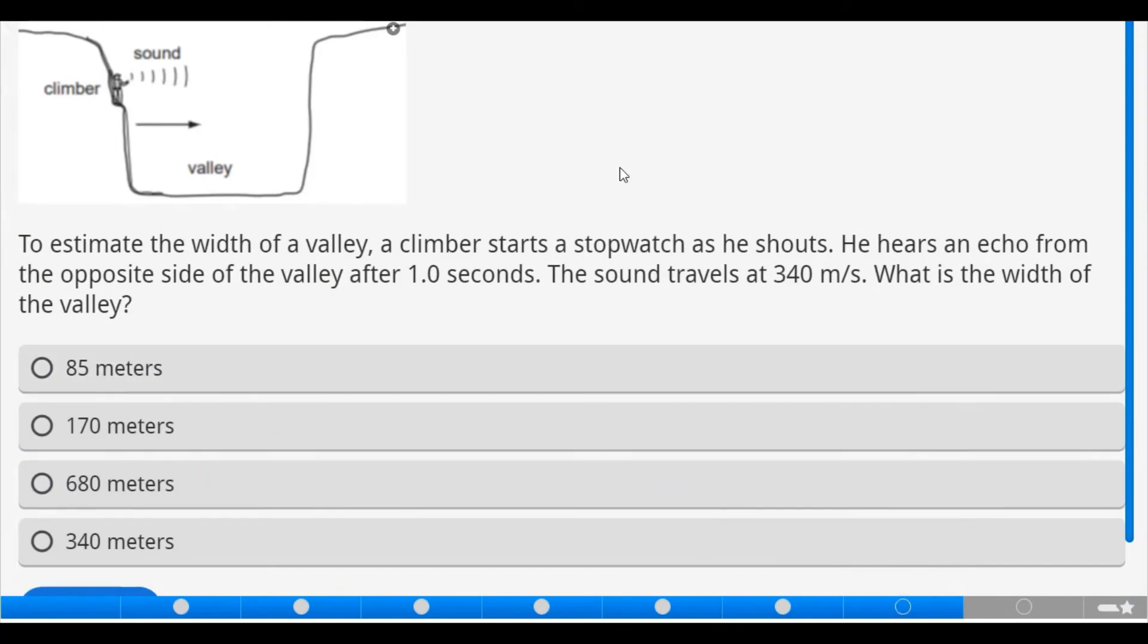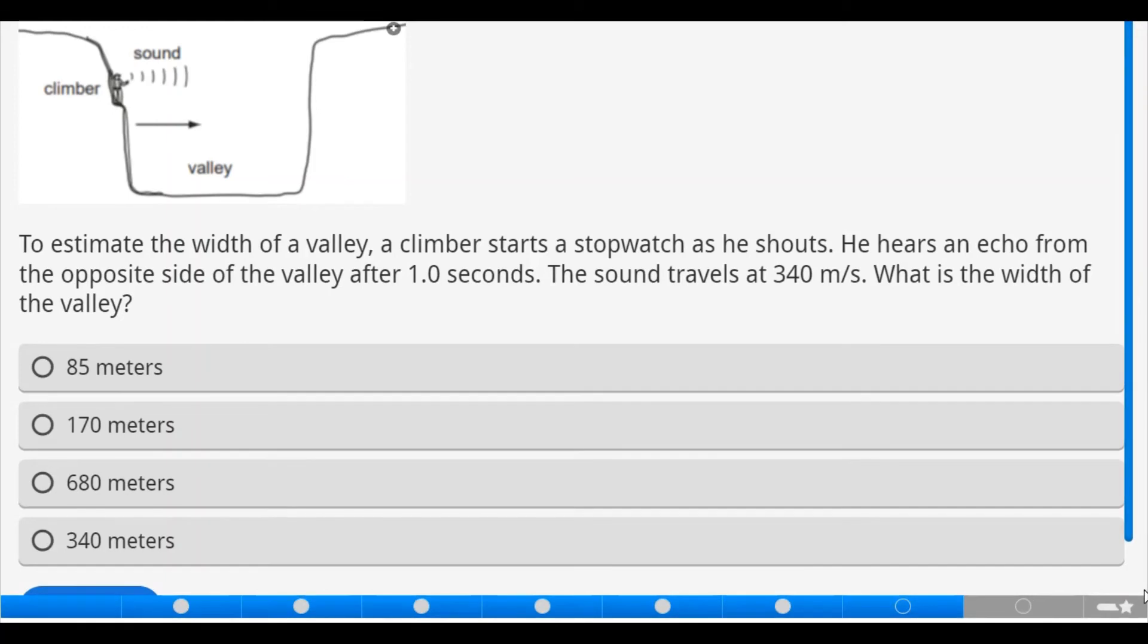Let's move on. Now, looking at this question, it follows the formula we just did now. To estimate the width of a valley, a climber starts a stopwatch as he shouts. He hears an echo from the opposite side of the valley after one second. The sound travels at 340 meters per second. What is the width of the valley? Here, we are going to be dealing with the calculation of the distance of the valley.